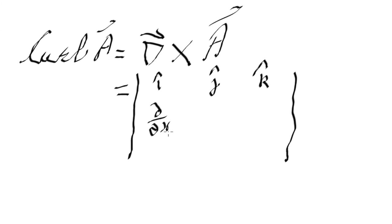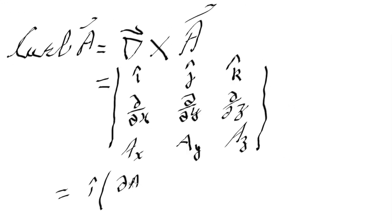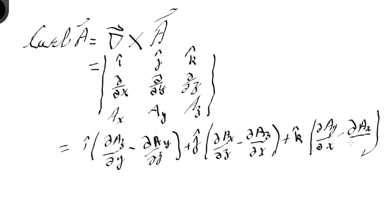Mathematically, we can write curl of a vector equals del cross A vector, that gives the value of i cap partial Az upon partial y minus partial Ay upon partial z, and so on.